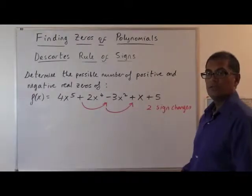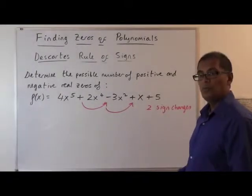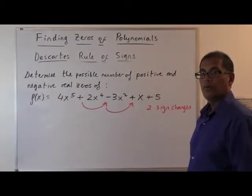Two sign changes. Therefore, according to Descartes' rule of signs, we have either two positive zeros or zero positive zeros.